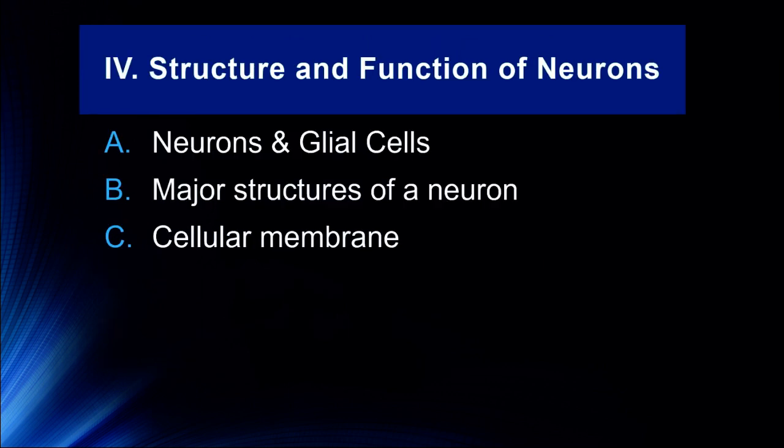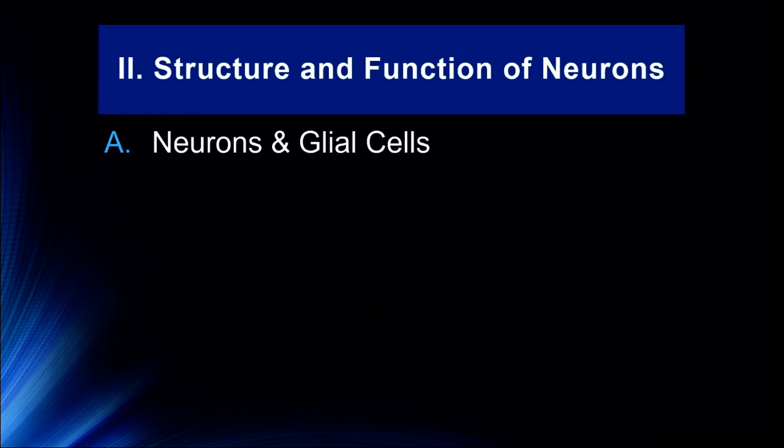We'll start off by talking about neurons and glial cells. There are two different types of cells throughout the central and peripheral nervous systems. We'll talk about the major structures of a neuron, and then we'll talk about the cellular membrane itself, which is of particular importance to how neurons function.